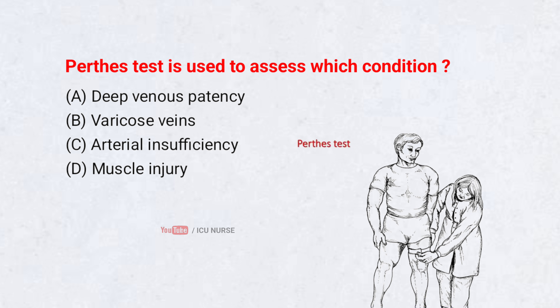Perthy's test is used to assess which condition? A. Deep venous patency. B. Varicose veins. C. Arterial insufficiency. D. Muscle injury. Correct answer: A.